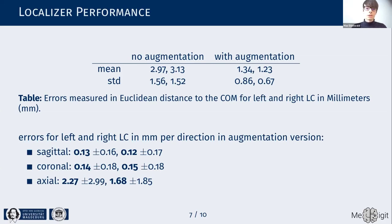We also trained two versions of the network: one without any augmentation of the input training data, and one with small random rotations, scaling, and translations applied. The errors suggest that the version with augmentation performed preferably.